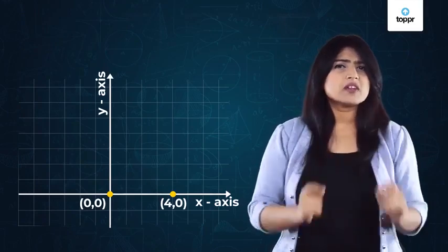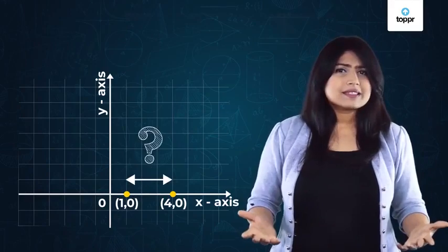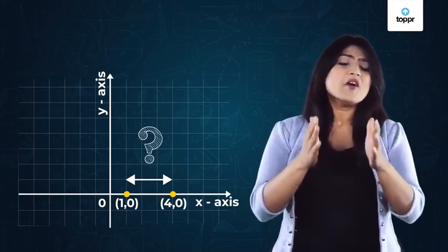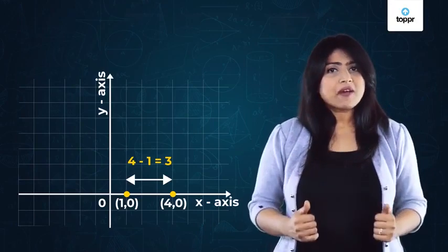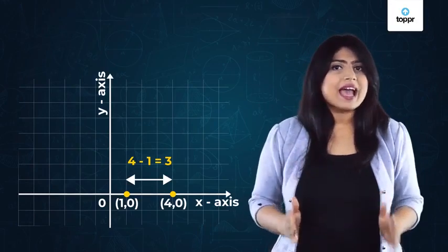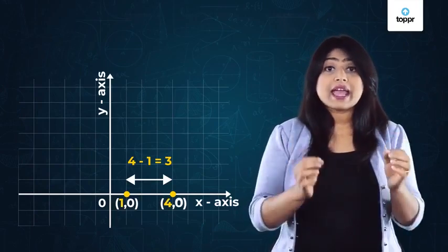Now, let us shift the first point to 1,0. What will be the distance now? It is 4 minus 1 which is equal to 3. So, we can find the distance between two points on the x axis simply by finding the difference between their x coordinates as the respective y coordinates are zero.